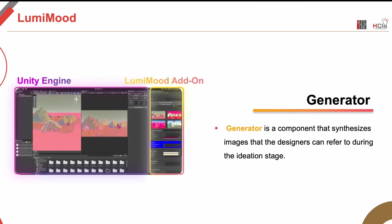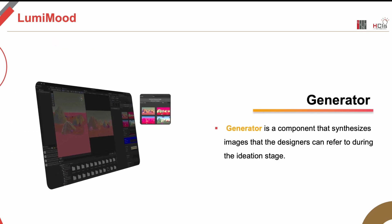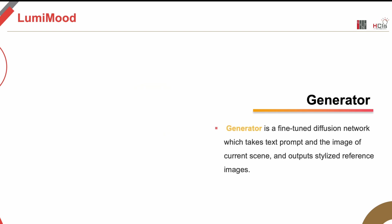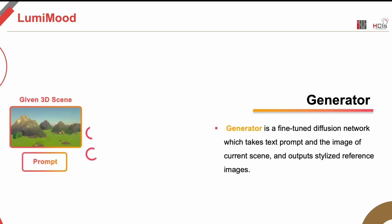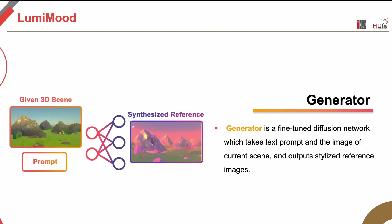The first component of LumiMood is the generator, which synthesizes images that designers can refer to in the ideation stage. With text prompts, the generator allows designers to generate images that possess the mood they intend. We trained the diffusion model on an affective image dataset with machine-generated captions. The generator takes the current scene image and a text prompt explaining the desired mood as input, and outputs a synthesized image.